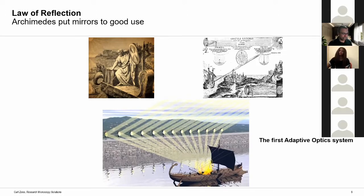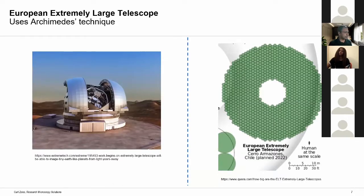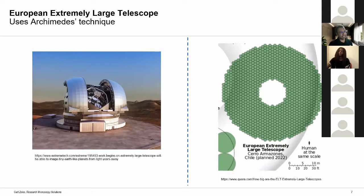More than 2,300 years later we are using exactly the same principle to build some of the world's most sophisticated optical instruments. For example, the European Extremely Large Telescope, which is under construction. This telescope is essentially a very large concave mirror built out of hundreds of smaller hexagonal shaped plane mirrors. Each mirror can be gimbaled following a feedback which tries to provide the effective concave mirror as small a focal spot as possible — exactly what Archimedes was trying to do.